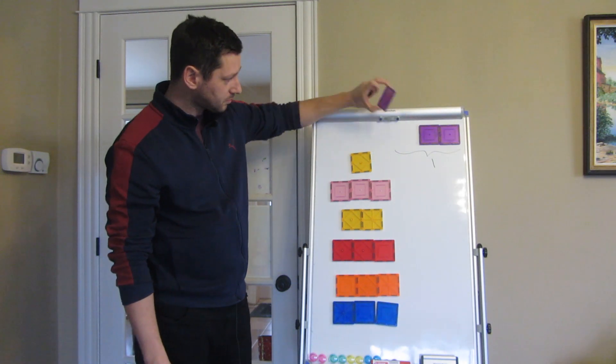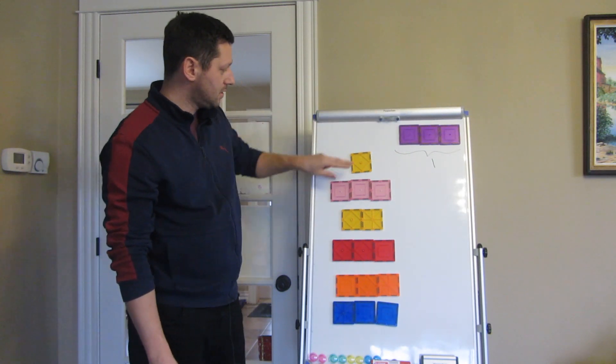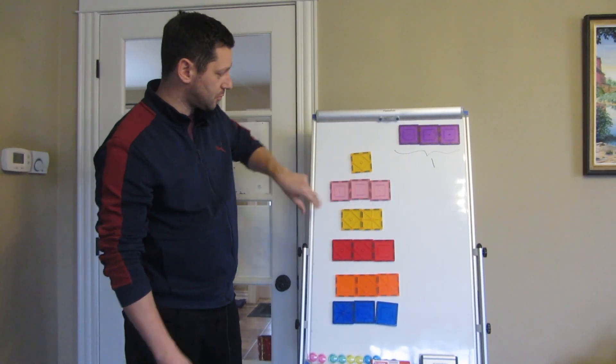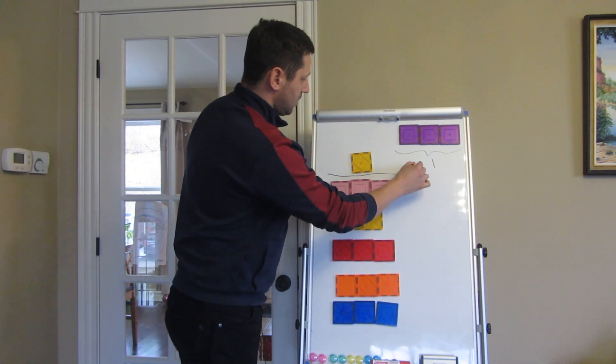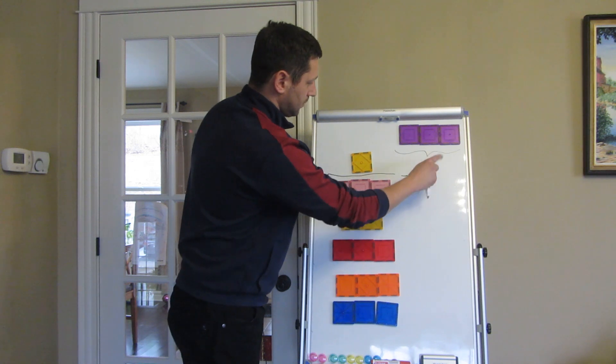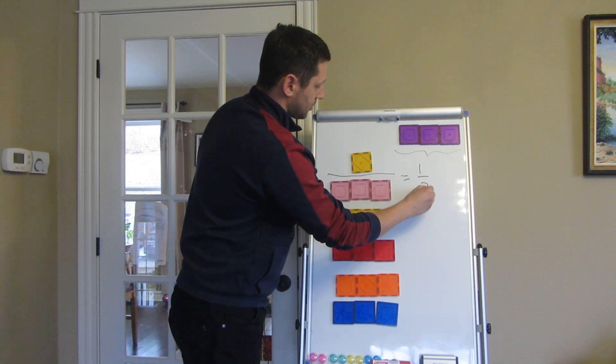So if we take one of the squares, you've got one square out of three. So in mathematics we use this notation to show this, so it will be one out of three.